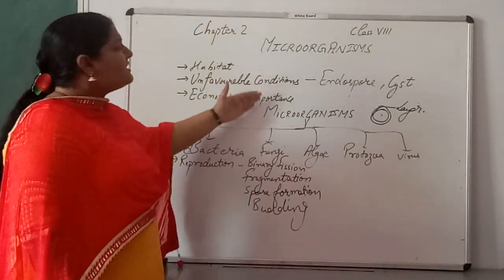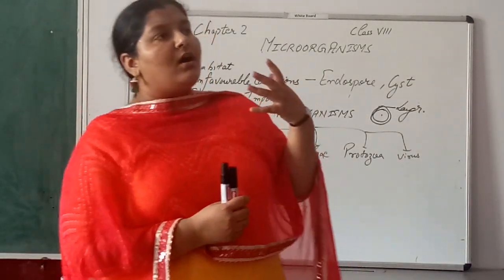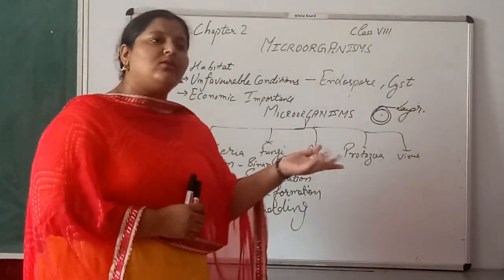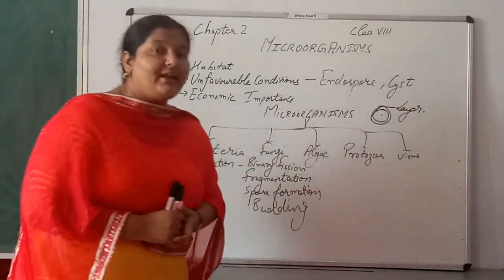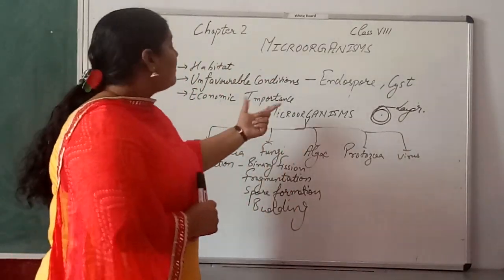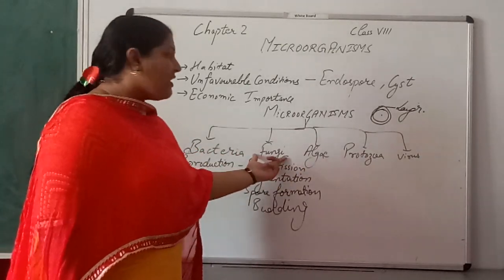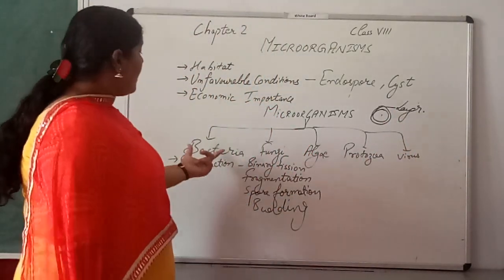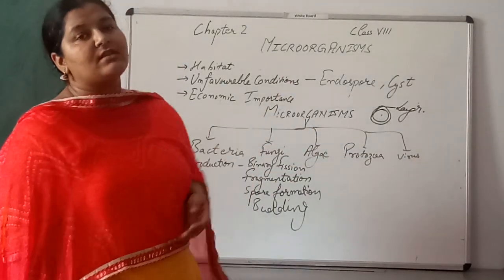On the basis of their general characteristics — habitat, survival in unfavorable conditions, economic importance, and reproduction — micro-organisms are classified into certain categories: Number one is bacteria, number two is fungi, then algae, protozoa, and virus. Each of these groups has distinct characteristics.